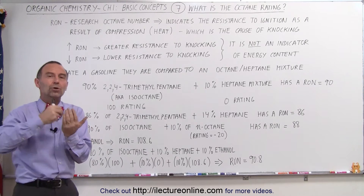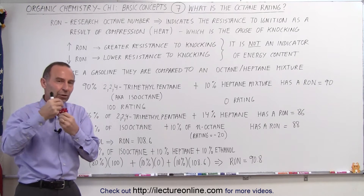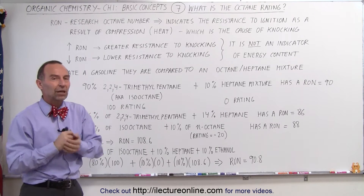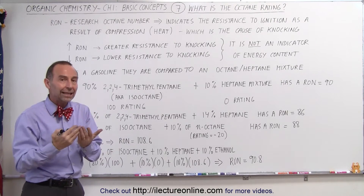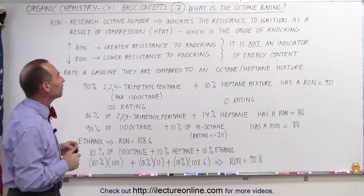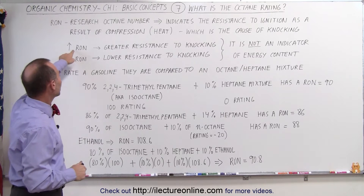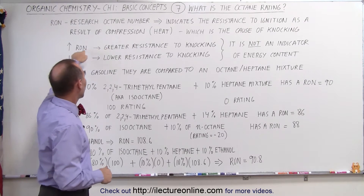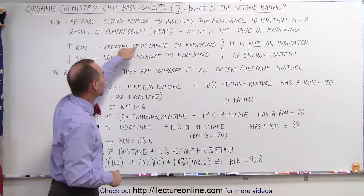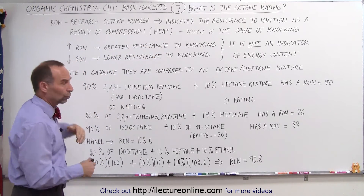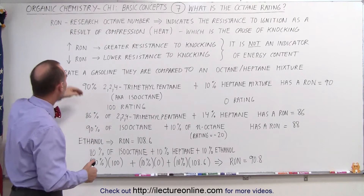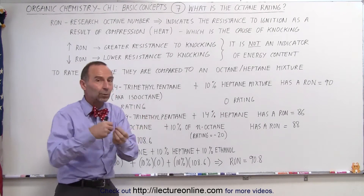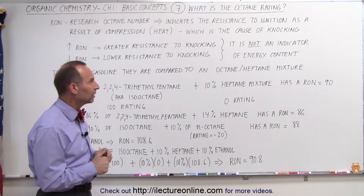So you want to resist the early ignition of the air-fuel mixture before it's supposed to ignite, and you want a higher octane level to resist that tendency. If the RON is higher, then we have greater resistance to knocking and greater resistance to early ignition. If the RON is lower, then it has a lower resistance to knocking — more likely that it will ignite prior to when it's supposed to.